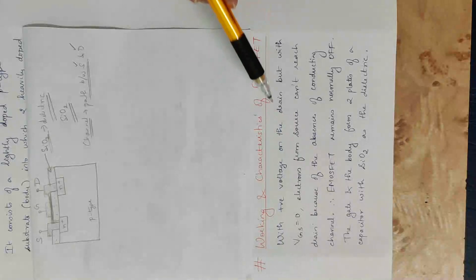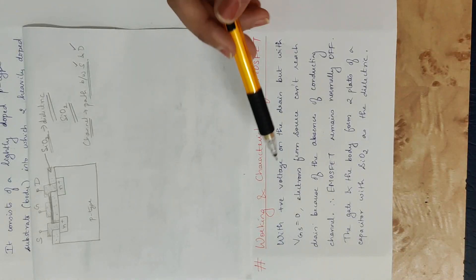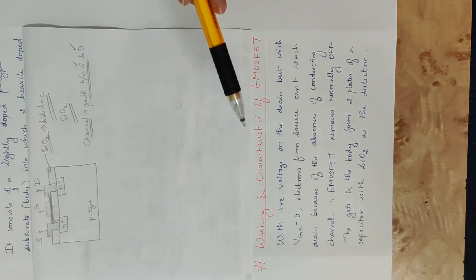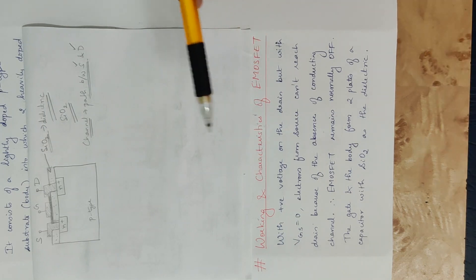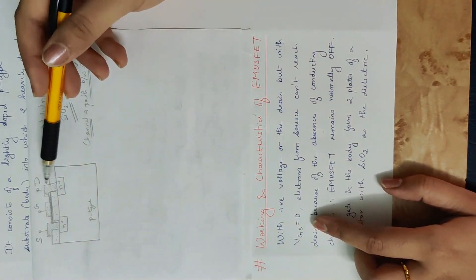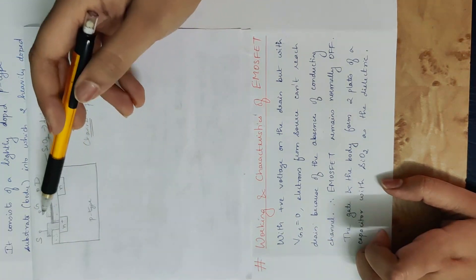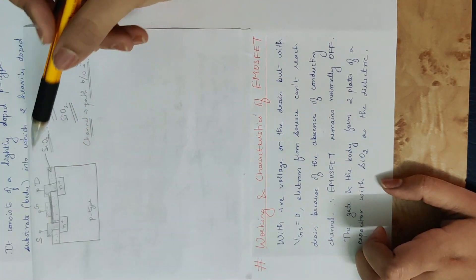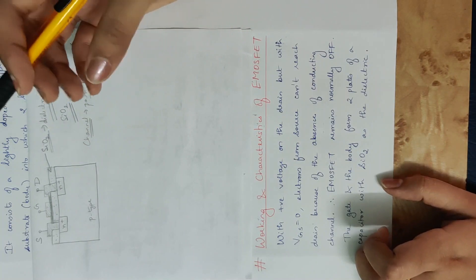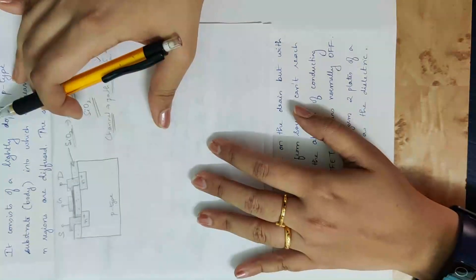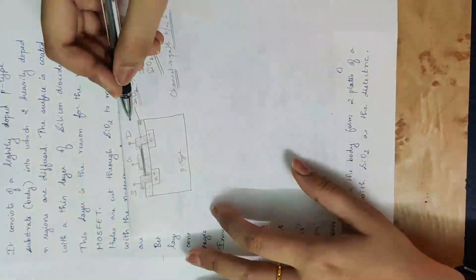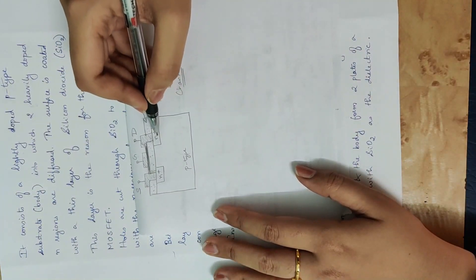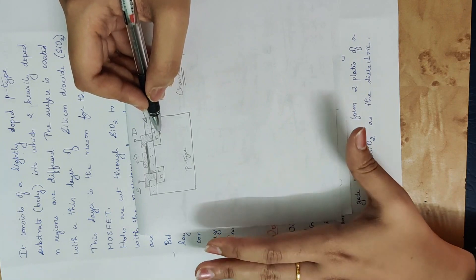Next is working and characteristics of E-MOSFET. We are going to go back to the working and characteristics of E-MOSFET. We are connecting batteries across the source and drain. When we are connecting with J-FET, we are connecting with N-channel E-MOSFET.